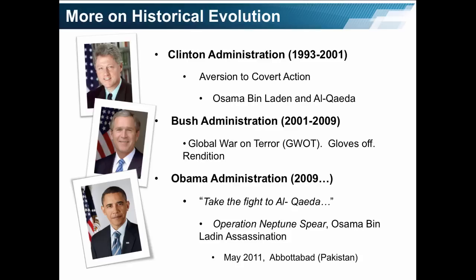The Clinton administration is claimed to have had an aversion to covert action. This is why it is claimed that this administration did little or nothing against Osama bin Laden and al-Qaeda. During the Bush administration, and in response to the attacks of 9-11, the global war on terror was launched. This meant that the U.S. government took the gloves off, and covert operations, particularly involving rendition, were used. During the Obama administration, covert actions have been used to take the fight to al-Qaeda.